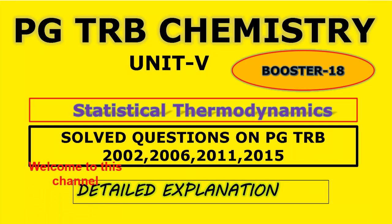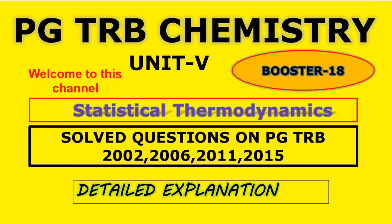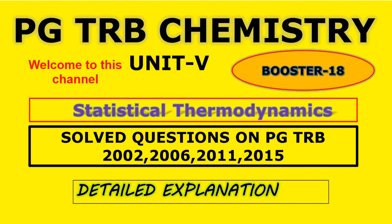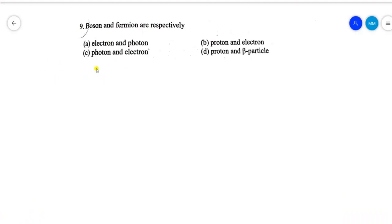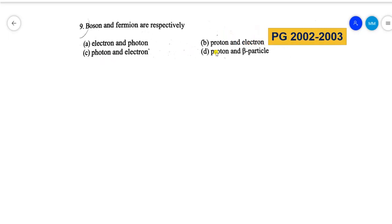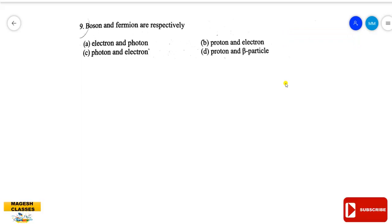Hello viewers, welcome to my guest chemistry classes. This presentation discusses statistical thermodynamics solved questions on PGTRB from various years: 2002, 2006, 2011, and 2015. The channel covers unit-wise solved questions on various examinations. For statistical thermodynamics, level three or four questions appear regularly, with a minimum of two compulsory questions on the topic, worth one unit.